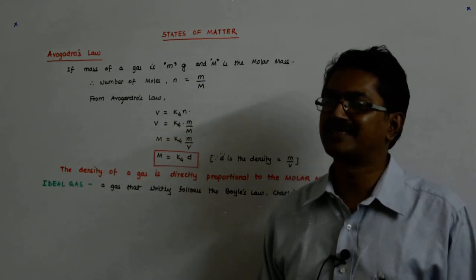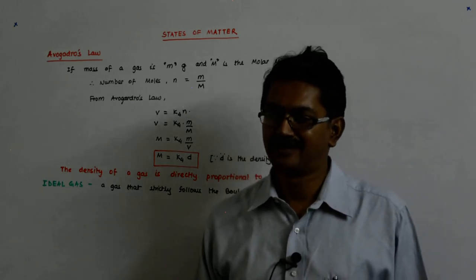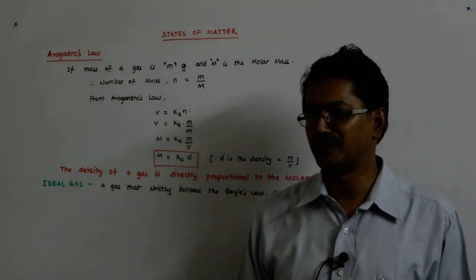Because when I say Boyle's and Charles's, it automatically implies that Gay-Lussac's will be obeyed. It has to, there is simply no way out. Correct?